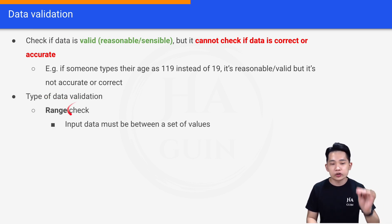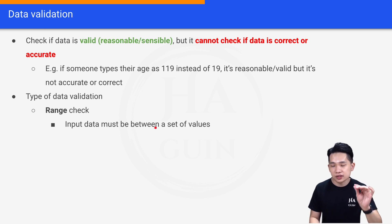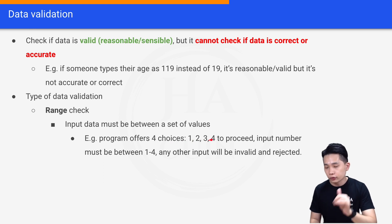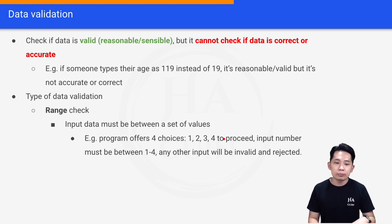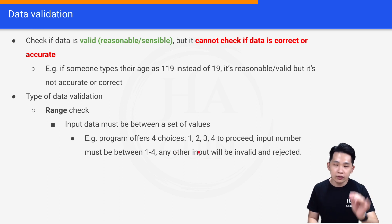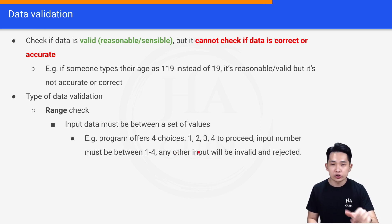Now let's look at different types of data validation. The first one is range check. For a range check, you are checking that the input data must be between a set of values. For example, a program offers four choices — one, two, three, four — to proceed; the input number must be between one and four, and any other input will be invalid and rejected.